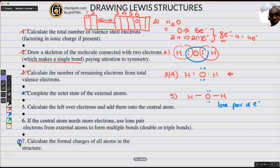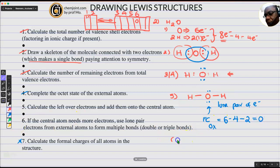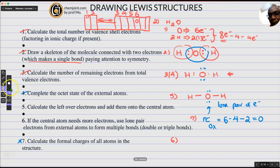By the way, you always want to do formal charges. If you try to do the formal charge on oxygen here, formal charge of oxygen equals the valency of oxygen minus the number of non-bonding electrons — those are the lone pair of electrons — minus number of bonds. It's zero. Water does not have charge. You would have done the same with ammonia. So that would be step seven.